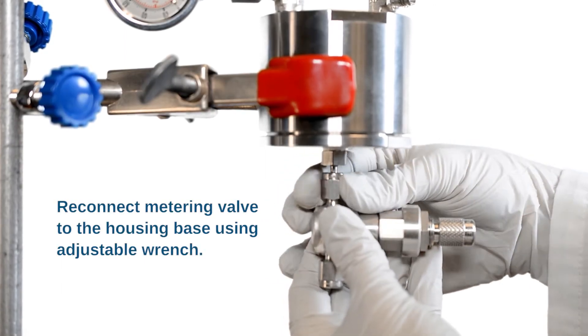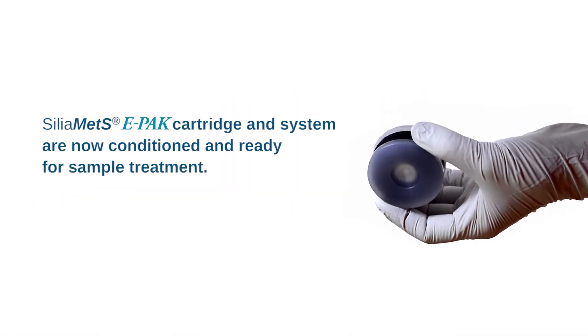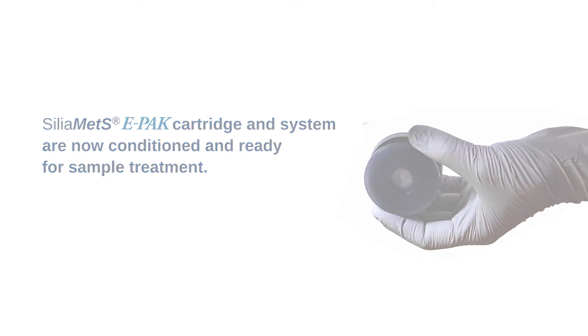Reconnect metering valve to the housing base using the adjustable wrench. Make sure that the valve is installed correctly. SiliaMet E-PAK cartridge and system are now conditioned and ready for sample treatment.